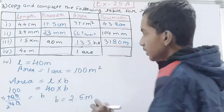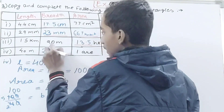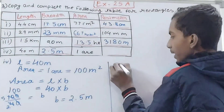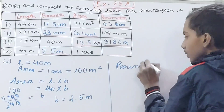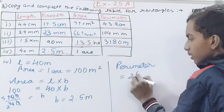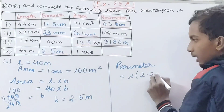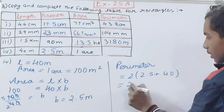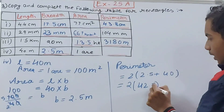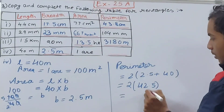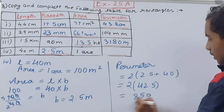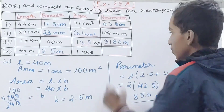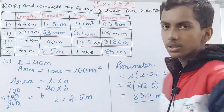Breadth is 2.5 meters. Now perimeter = 2 × (l + b) = 2 × (40 + 2.5) = 2 × 42.5 = 85 meters. So 85 meters is the perimeter of the fourth rectangle.